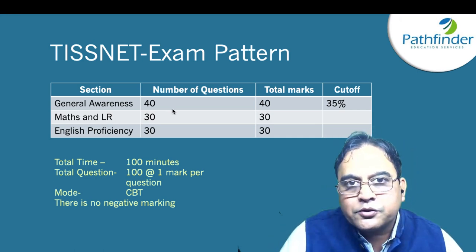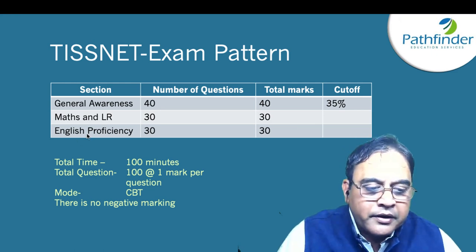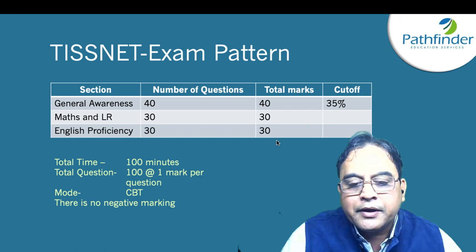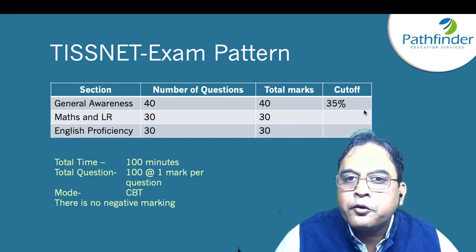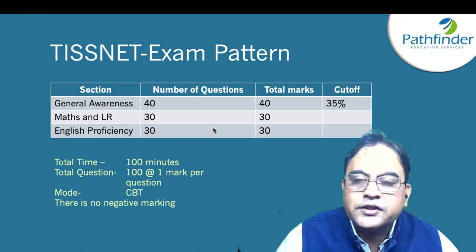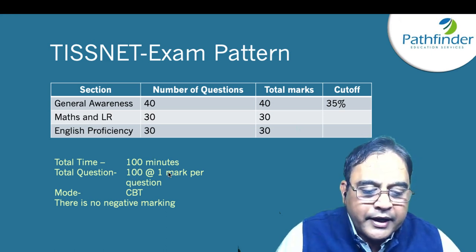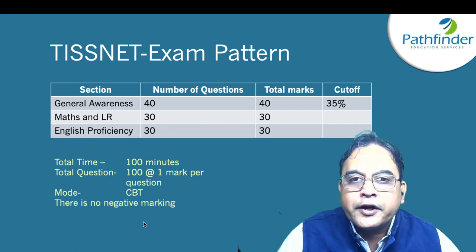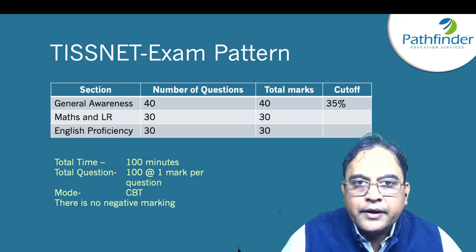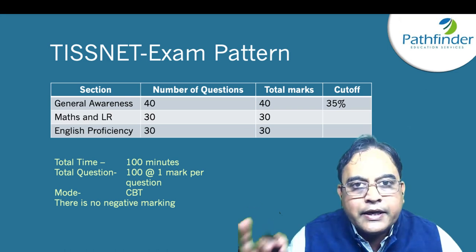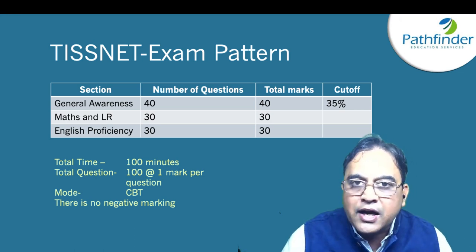Then there is Maths and Reasoning with 30 questions — easy to moderate level. Then English Proficiency with 30 questions, 30 marks. Important note: General Awareness has a cutoff of 35%, which is around 14 marks out of 40. You must score at least 14 marks in the GK section to qualify stage 1. Total time is 100 minutes, one mark per question, and there is no negative marking. Attempt all 100 questions — don't leave any. It is a computer-based test (CBT mode).